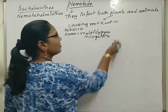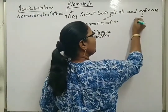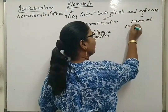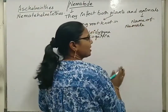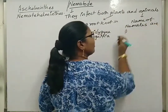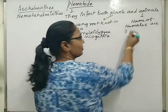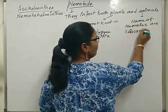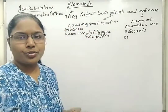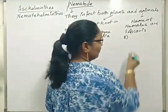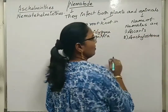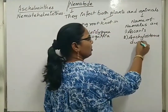Now, the type of nematode that infects animals. The first example is Ascaris. The second one is Ankylostoma, also called hookworm — the complete name is Ankylostoma duodenale.